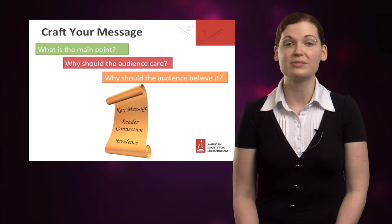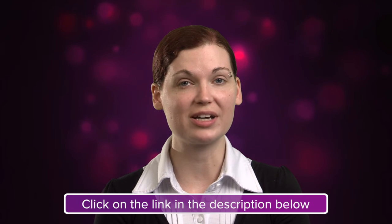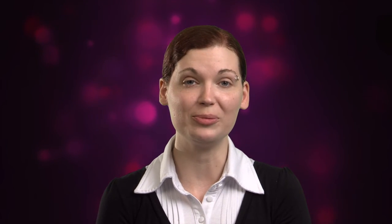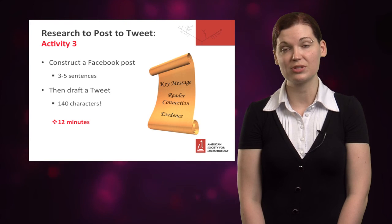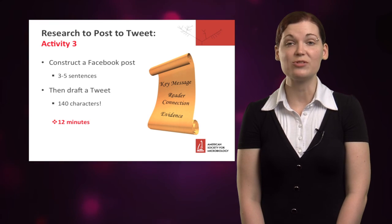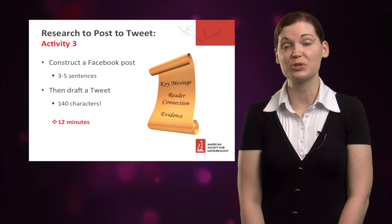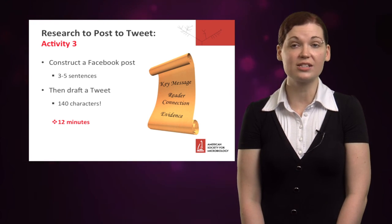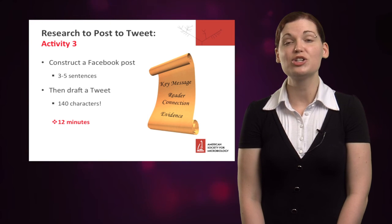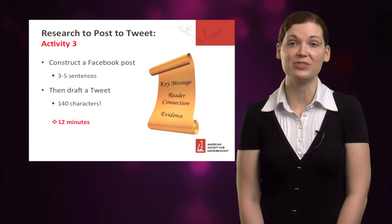These are the three main points. For Activity 3, we want you to choose one of the research articles for which we've provided abstracts — click on the link in the description below. First, compose a Facebook post, three to five sentences. After that, compose a tweet — remember, you only have 140 characters to work with. Filter out the details that are not essential for your audience and instead showcase what is so incredible about this work. Now is a good time to pause your video.